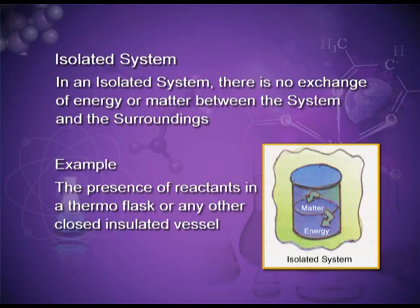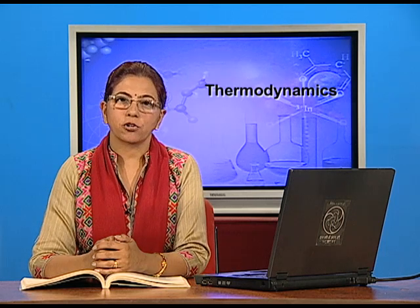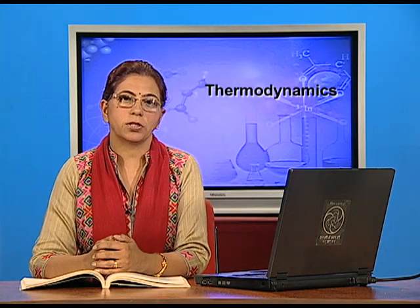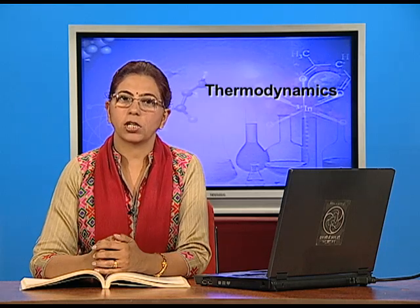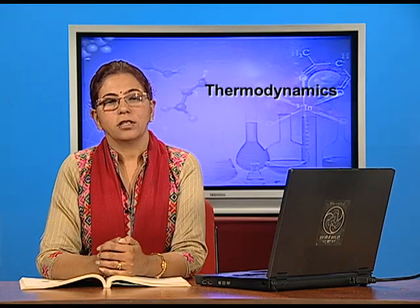To describe the state of a system, we must specify some macroscopic properties such as pressure, volume, temperature, number of moles of the substance, and composition. These are known as state variables. If there is any change in any one of these macroscopic properties, there is a change in the state of the system.